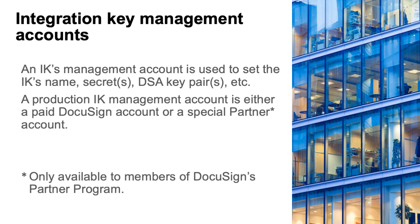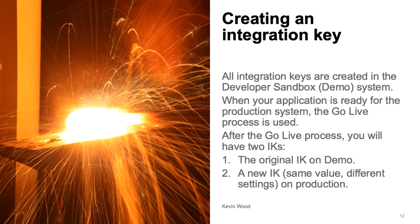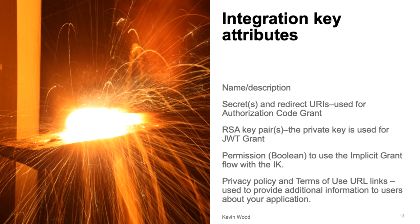Software vendors who are a member of the DocuSign partner program can obtain a no-charge partner account on the production systems that can be used to manage production integration keys. All integration keys are created in the developer sandbox system, that's demo.docusign.net. When your application is ready for the production system, the go-live process is used. After the go-live process, you will have two integration keys: the original integration key on demo and a new integration key — same value but different settings — on production. You can still use your original IK on demo after completing the go-live process.